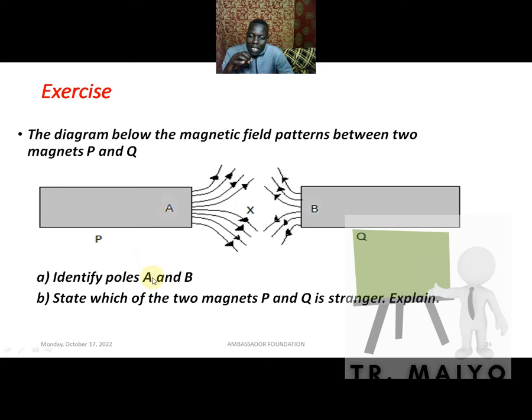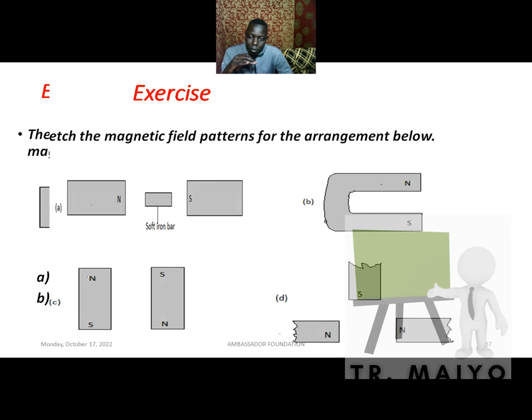Identify the polarities A and B by looking at the direction of the magnetic field lines. State which of the two magnets, B and Q, is stronger and explain your answer using the concept that when field lines are closer, the field is stronger and the magnet is stronger. Also, draw the magnetic field patterns for the given arrangements A, B, C, and D — think carefully before answering.